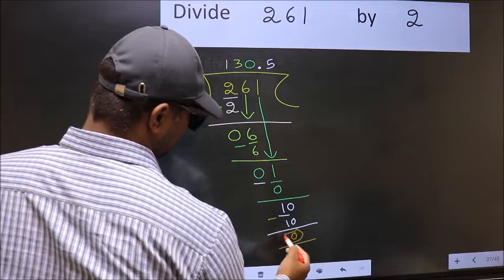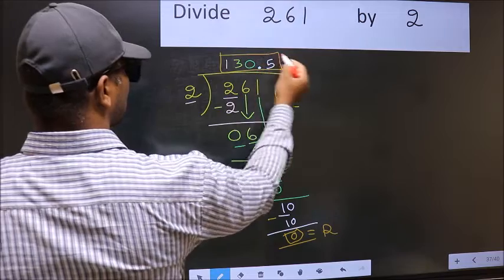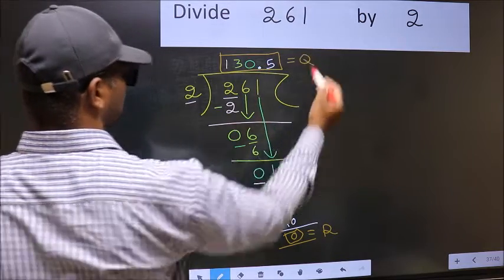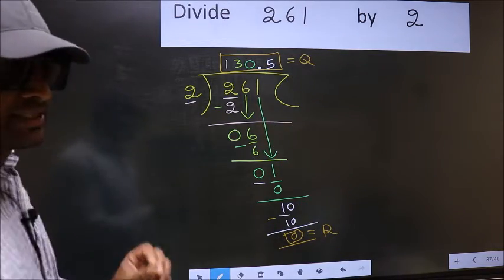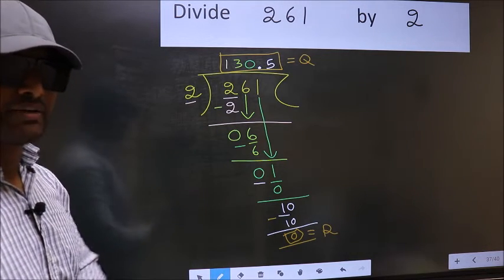So this is our remainder. And this is our quotient. Did you understand where the mistake happens? You should not do that mistake.